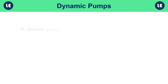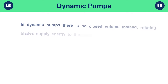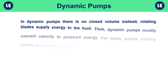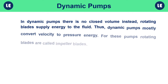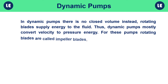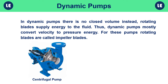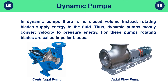In dynamic pumps there is no closed volume. Instead, rotating blades supply energy to the fluid, so dynamic pumps mostly convert velocity to pressure energy. For these pumps, rotating blades are called impeller blades. Examples of dynamic pumps are centrifugal pumps and axial flow pumps.